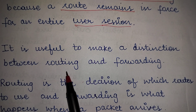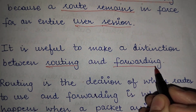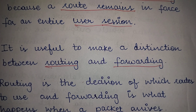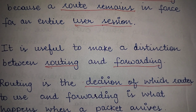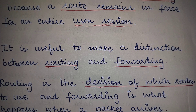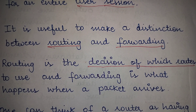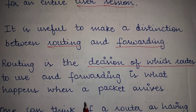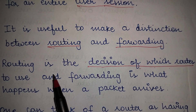Why is it useful to make a distinction between routing and forwarding? Routing is the decision of which route to use. For example, if you are going from Delhi to some destination, there may be two or three routes available. You decide which route to choose depending on whether you want less traffic or a shorter duration. Routing is the decision of which route to use among many available routes to find the optimal one.